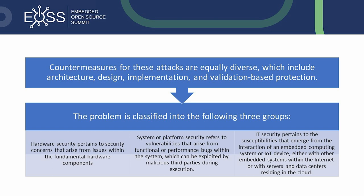First, hardware security, which pertains to security concerns arising from issues within the fundamental hardware components. Second, system or platform security, referring to vulnerabilities from functional or performance bugs within the system, which can be exploited by malicious third parties during execution. Finally, IT security, which pertains to vulnerabilities emerging from device interaction with other devices in a network or with remote servers and data centers. In this presentation, the emphasis is on the first two groups; IT security is out of scope.